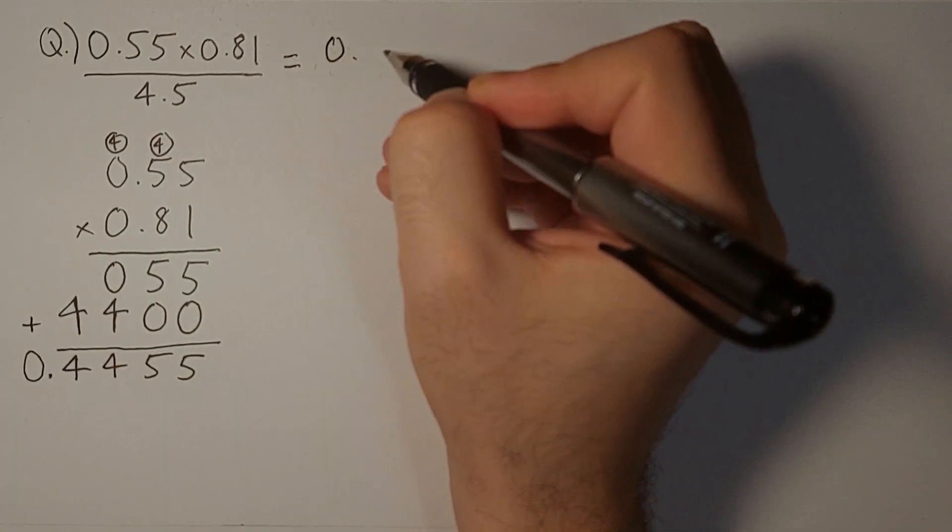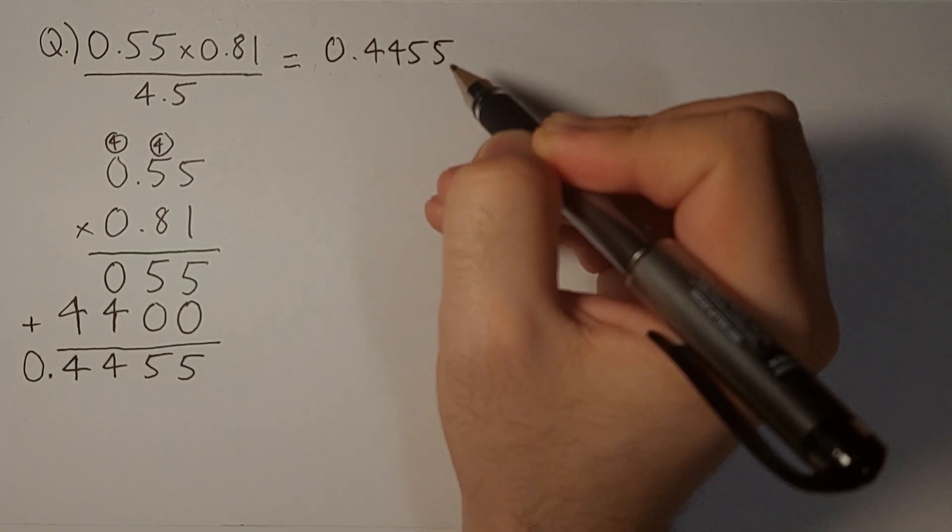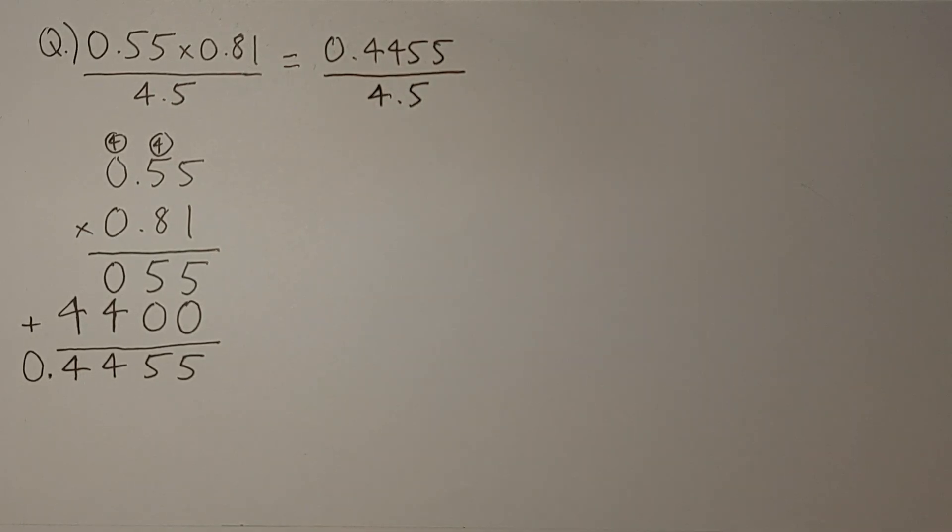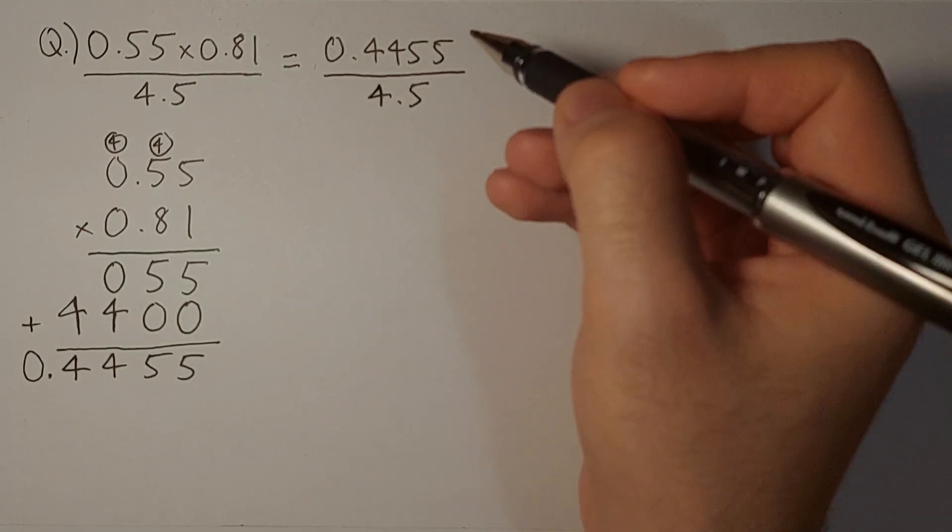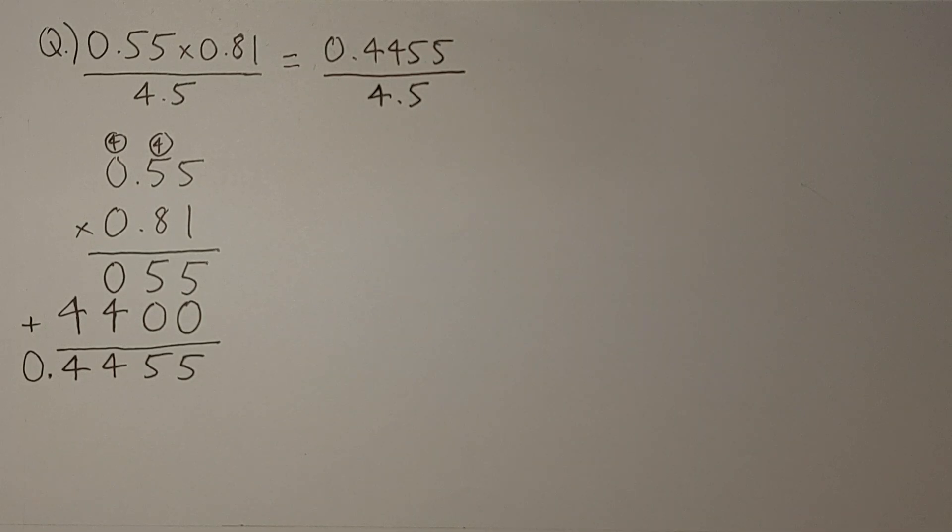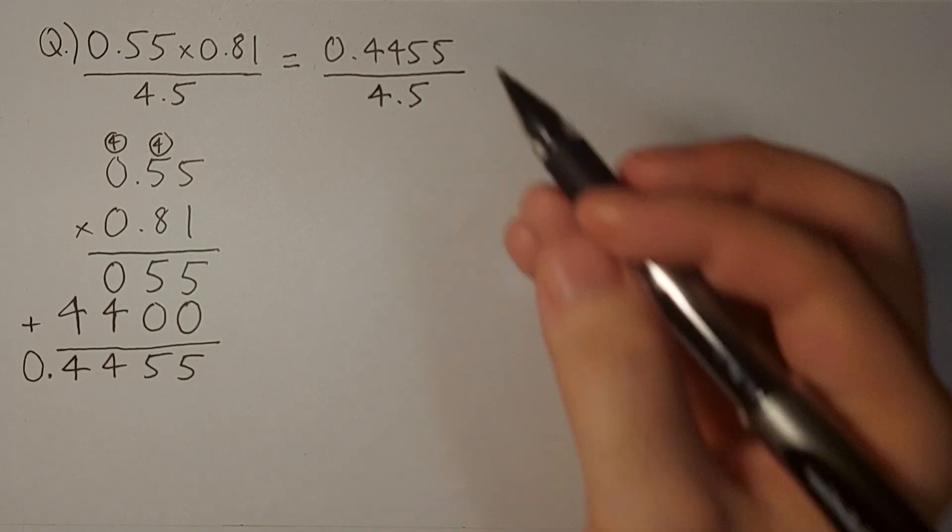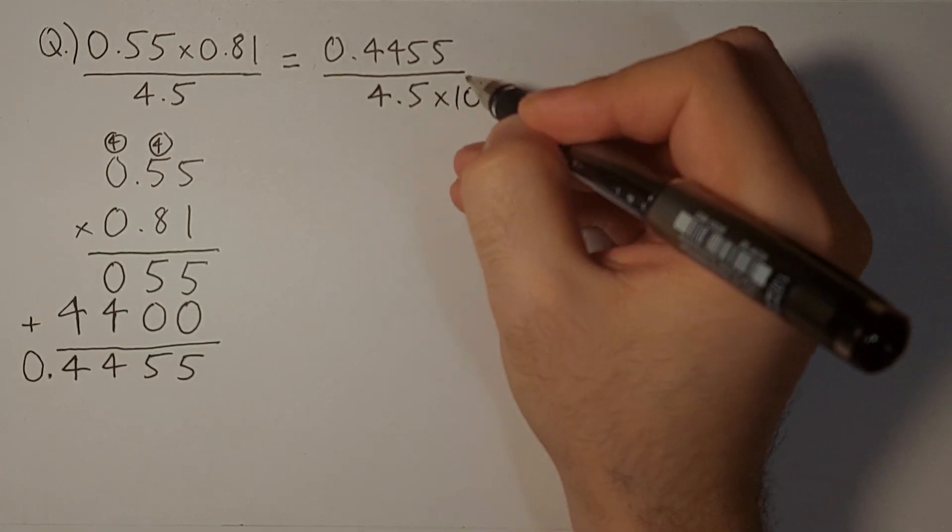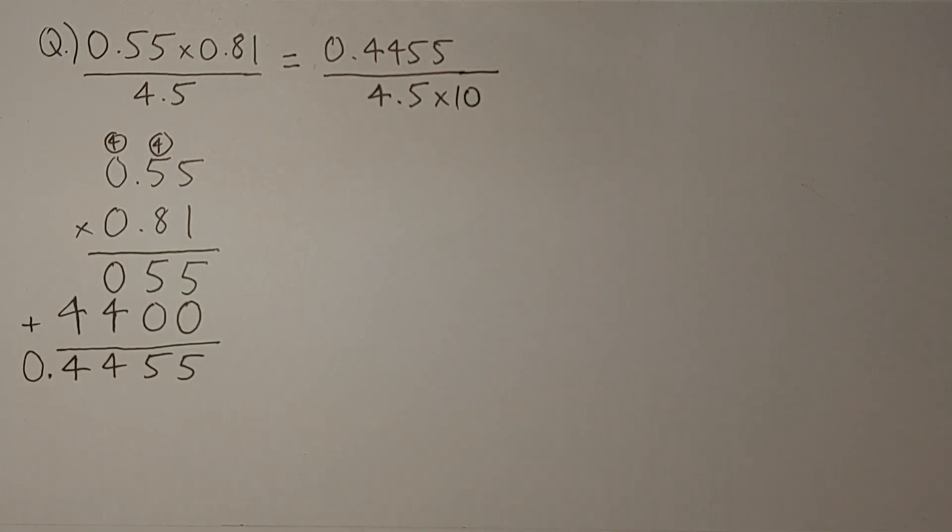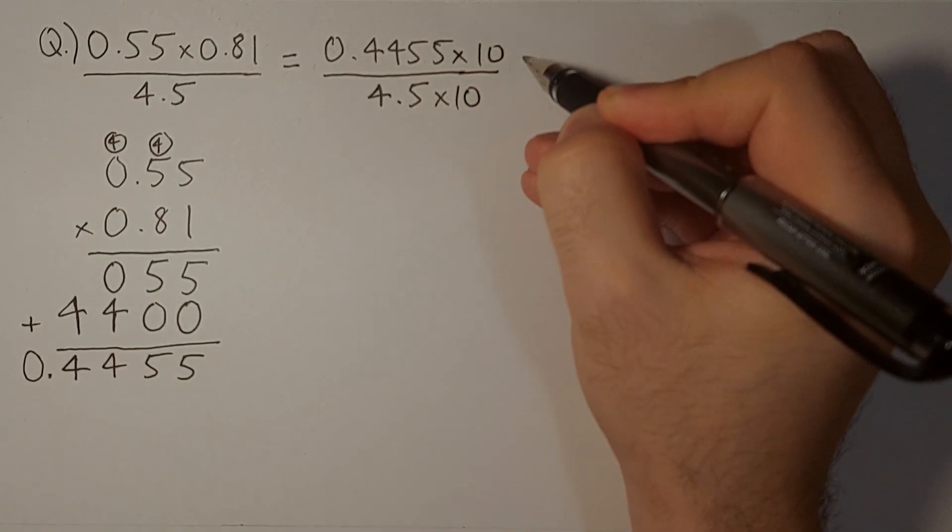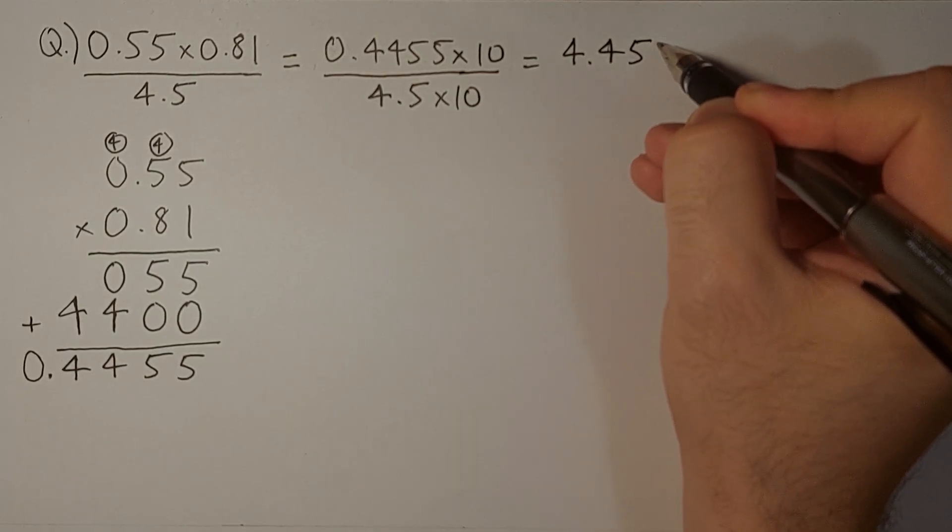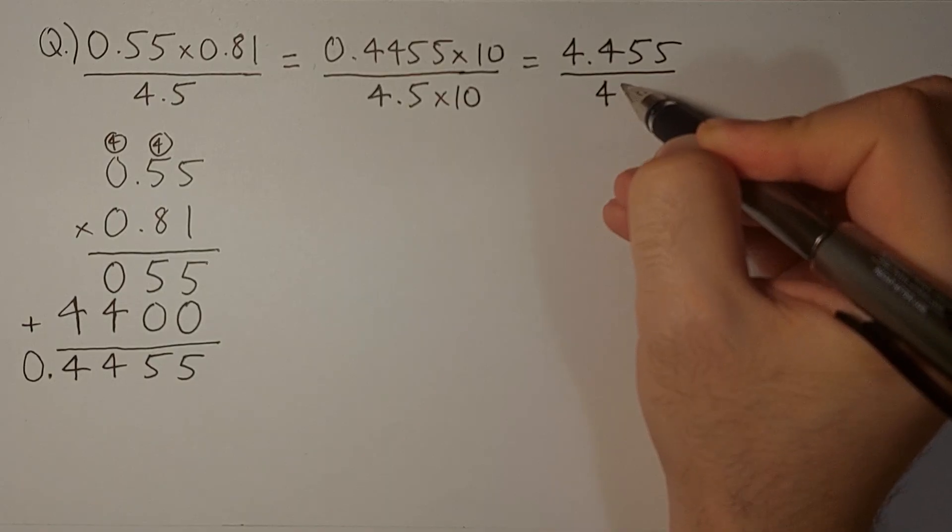This is equal to 0.4455 divided by 4.5. Now we have to multiply both the numerator and denominator by a number so that the denominator becomes a whole number. That will make it easier for us to do the division by hand. We need to multiply 4.5 by 10, so this will become 45. And to keep this fraction the same, we will do the same with the numerator. This will give us 4.455 divided by 45.